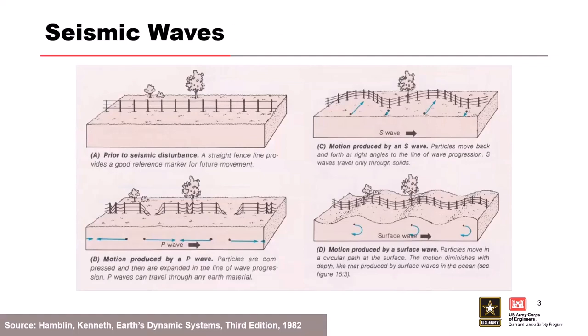There are three different kinds of basic seismic waves. An S-wave moves particles back and forth at right angles to the direction the wave is moving. A P-wave compresses particles along the direction of the wave. A surface wave moves particles in a circular pattern at the surface — kind of like surface waves in an ocean. A single earthquake event can and often does produce all of these waves.